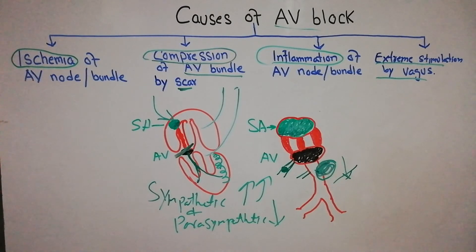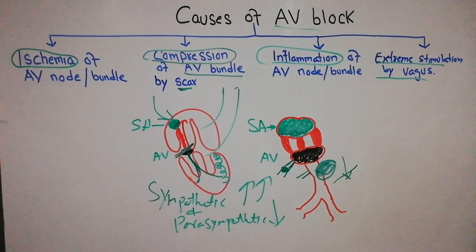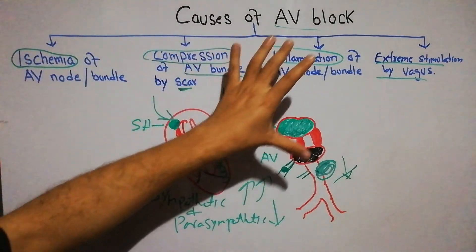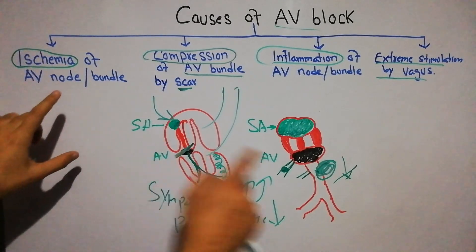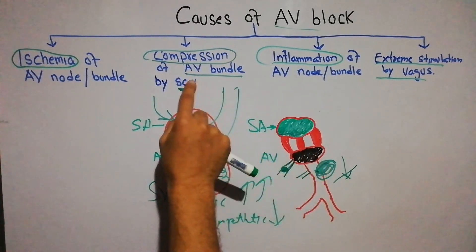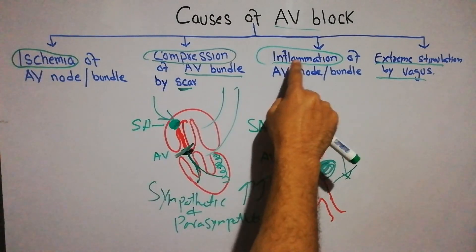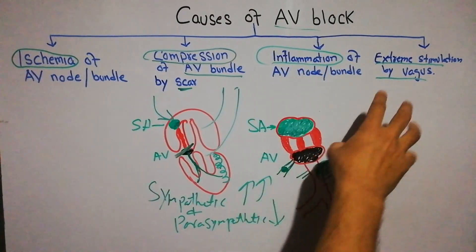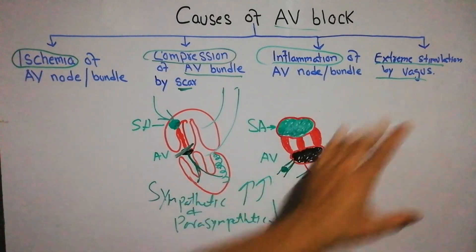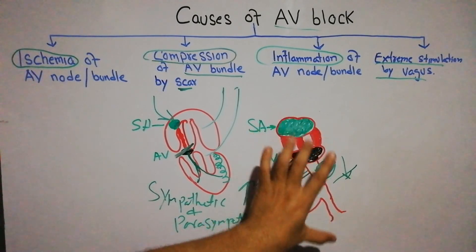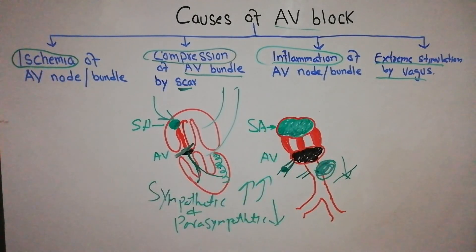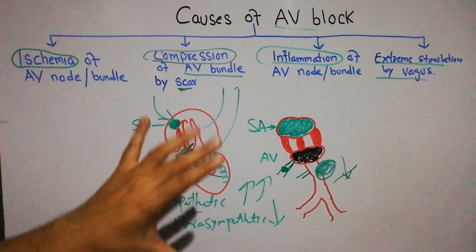To summarize, the causes of atrioventricular block are: ischemia of the AV node or AV bundle; compression of the AV node or AV bundle; inflammation of the AV node or AV bundle; and stimulation of the vagus nerve, which via parasympathetic activity decreases the transmission power of the AV node and AV bundle and decreases the heart rate. All of these causes contribute to cardiac arrhythmias.